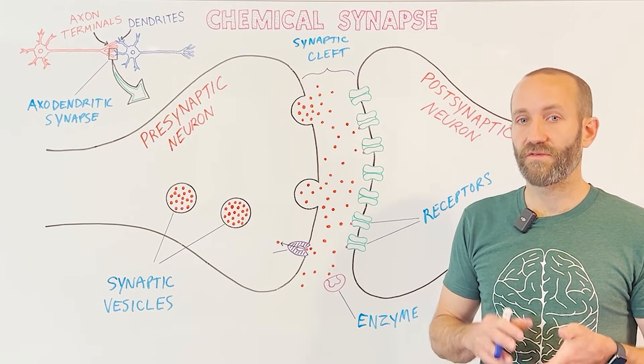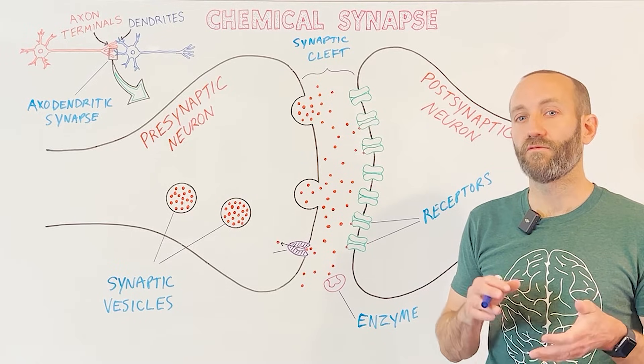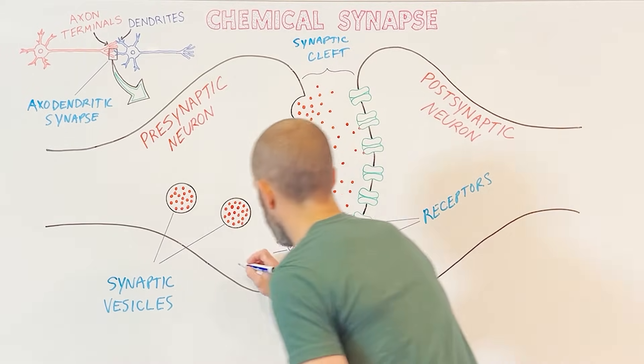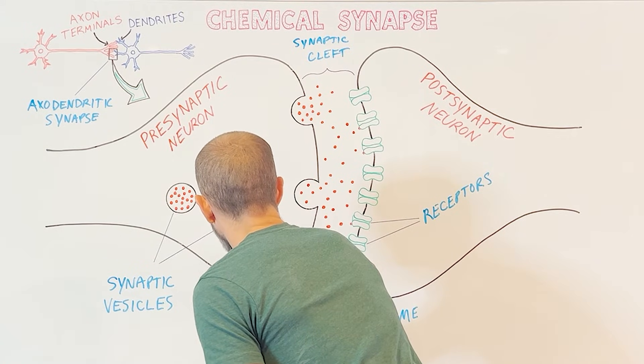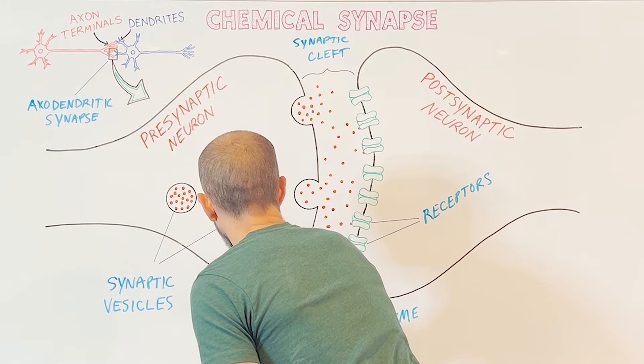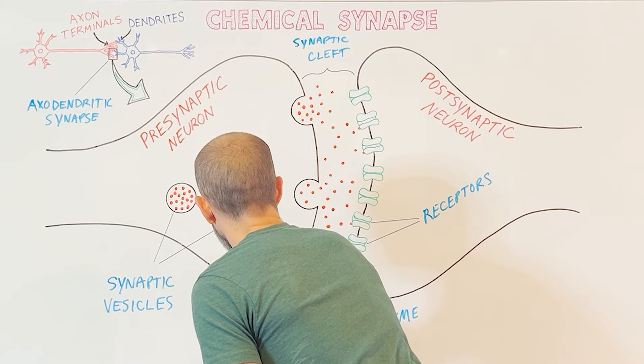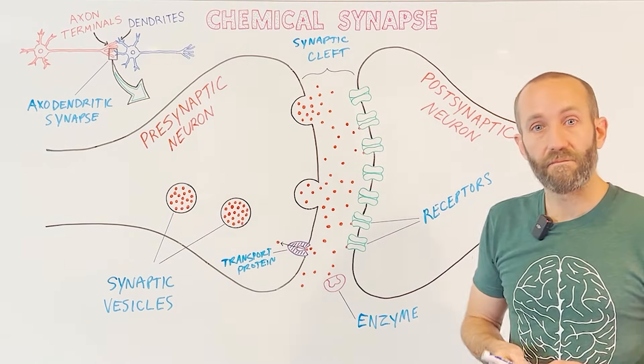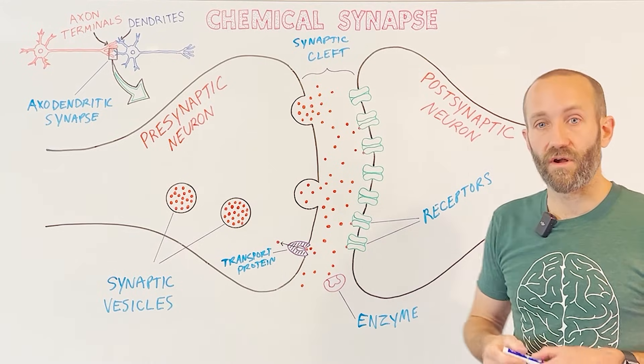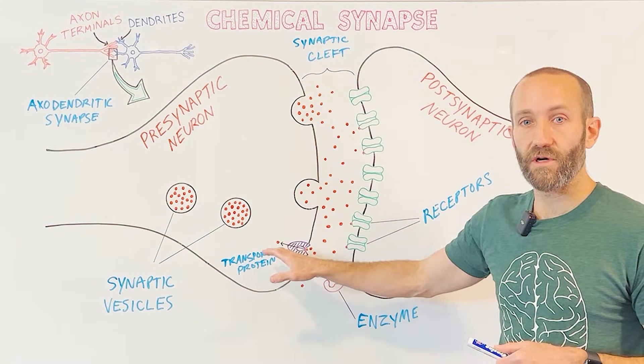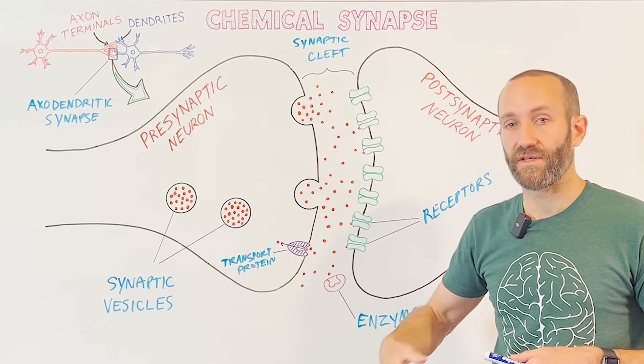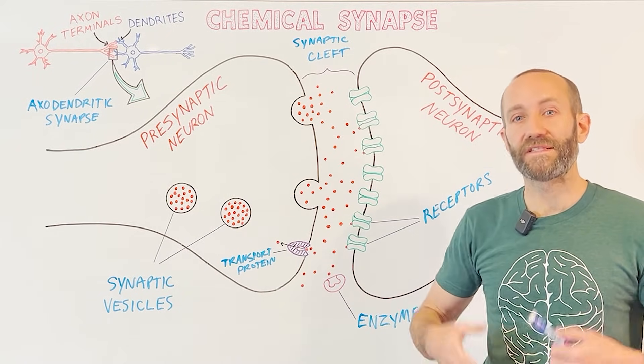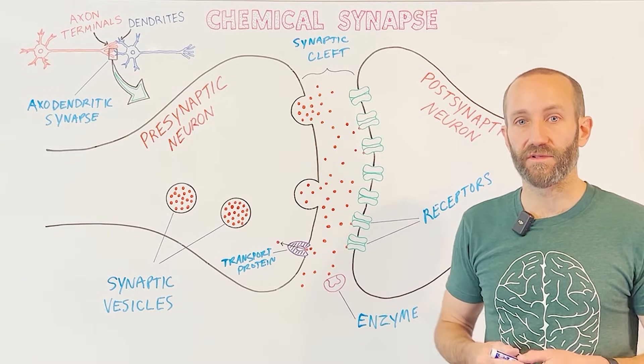A more common method of removing neurotransmitters from the synaptic cleft, however, is a process called reuptake. In reuptake, a protein called a transport protein, which typically sits embedded in the membrane of the presynaptic neuron, takes the excess neurotransmitter back up into the neuron that released it. That's why it's called reuptake, and in many cases these neurotransmitters can be recycled and repackaged into vesicles to be released again.